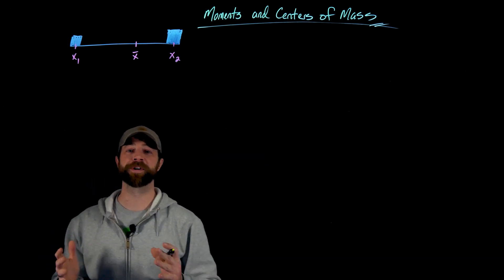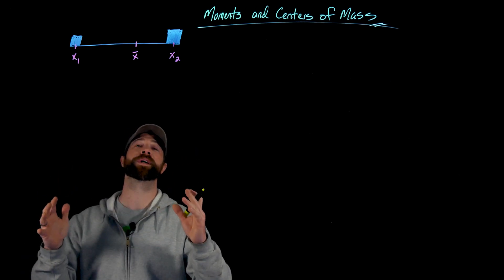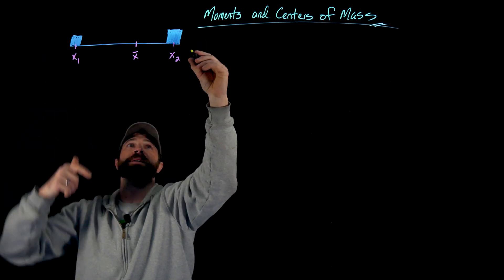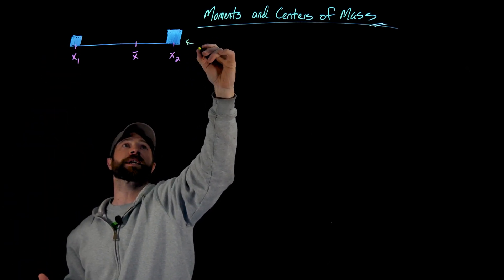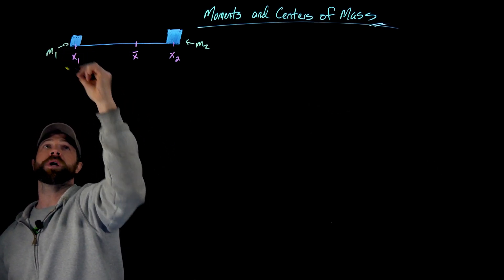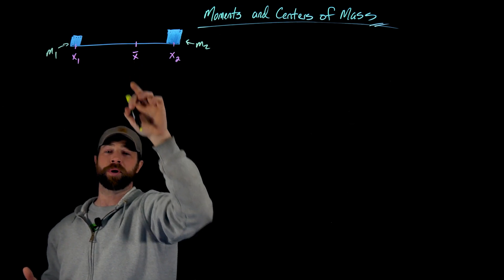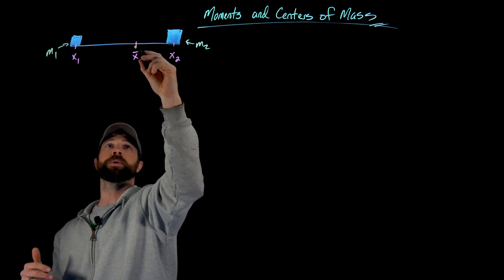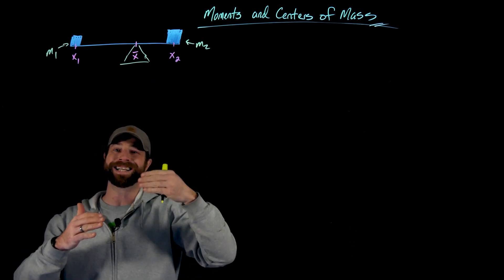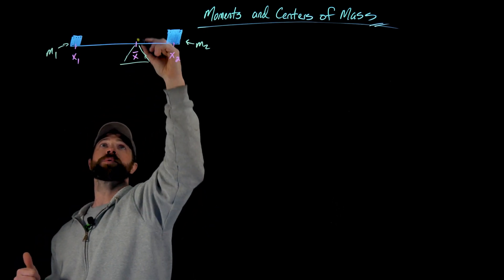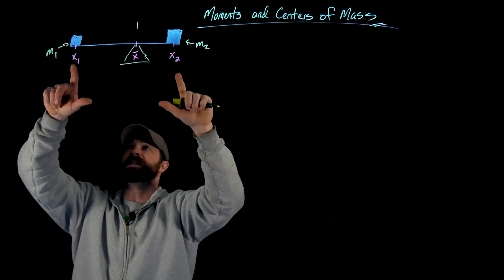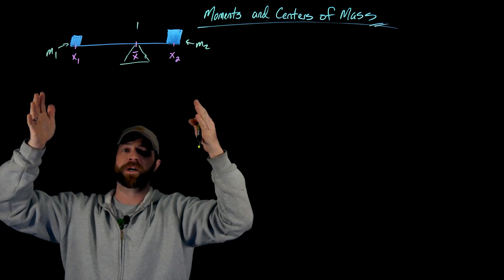To start the conversation, we're first going to consider a very simple one-dimensional case. Consider the situation where we have two objects that have different mass — we'll call them m1 and m2. We have a center point, x-bar, where if we were to put a fulcrum on this lever, these would be perfectly balanced. The distances x1 and x2 tell us about the relative position of these objects, and I want to define the distances these objects are from x-bar.